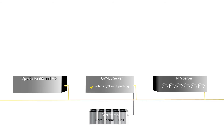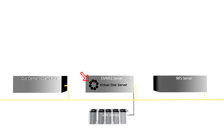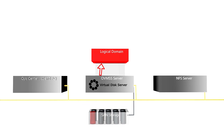When a virtualization server is provisioned as a control domain, Ops Center creates a virtual disk server on it. When you create a logical domain that uses a LUN, the virtual disk server creates a virtual disk on the logical domain to provide that domain with indirect access to the LUN you select. The virtual disk is listed in the Ops Center user interface as a local device for the logical domain.